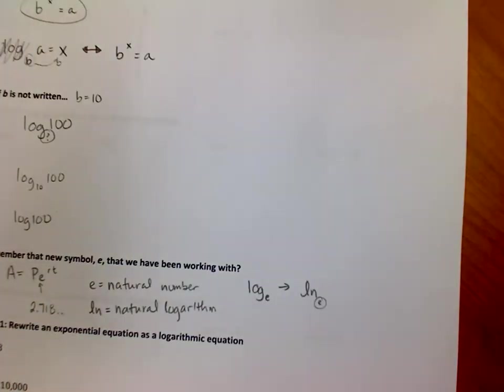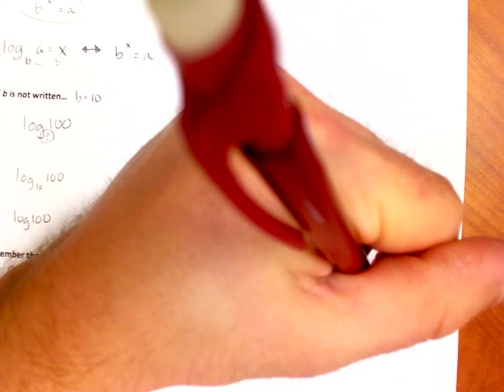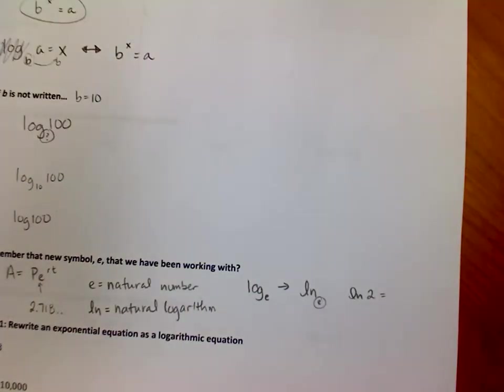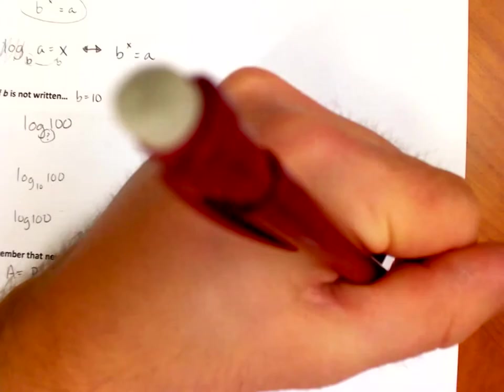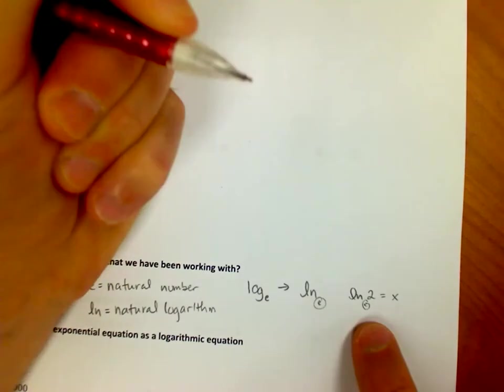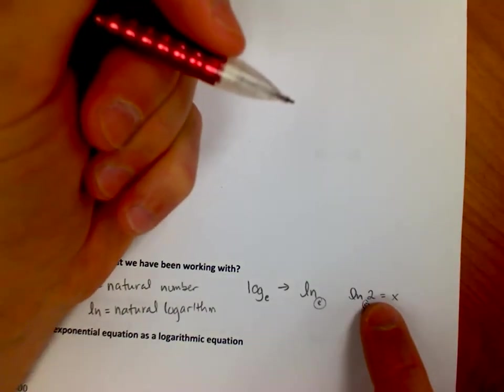So in other words, you're going to see things like this: ln of 2, natural log of 2. And what that statement means, if I had this and I wanted to rewrite it, I would say really it's not written in there but it's e, e to what power will give me 2?